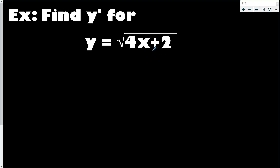We've got a radical function, but inside that radical function is a linear function — 4x plus 2. So this video covers radical functions with a linear function inside. The inside function is my u. Some people call this u-substitution; I'm not a big fan of that, but you can use it. I'll do this one the long way — my u is the inside function, so 4x plus 2.